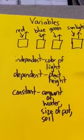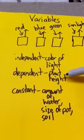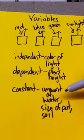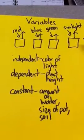So the independent variable is the one that you're changing. The dependent variable is the one that you measure at the end, and the constants are the ones that stay the same. And then you have your control group, which is your group that you're not even experimenting with.